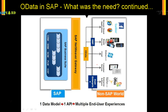Before moving to the next slide, here is a trivia: the nearest competitor of OData is GData from Google. However, SAP did not embrace GData; instead they went with OData because it was more uniform, had more advantages, and one of the best advantages over GData was OData's extensibility feature.